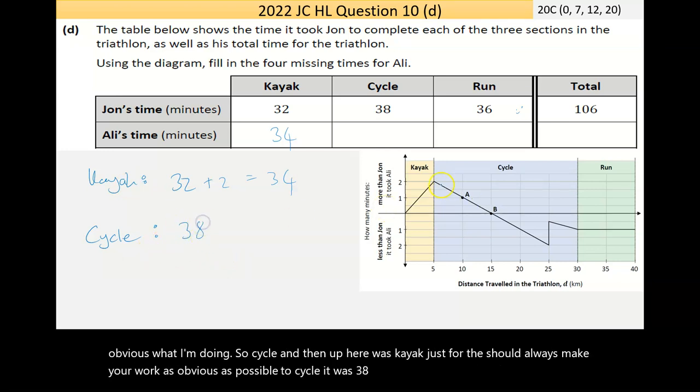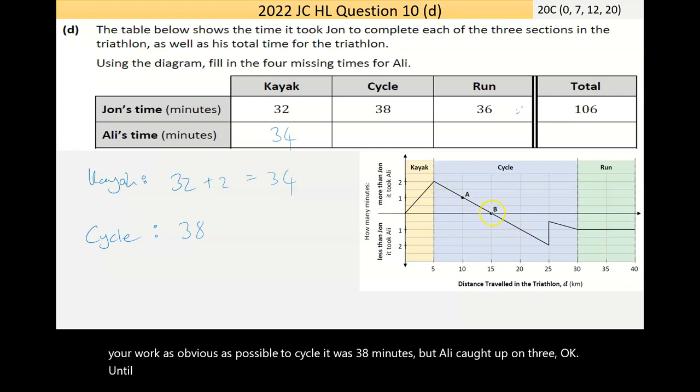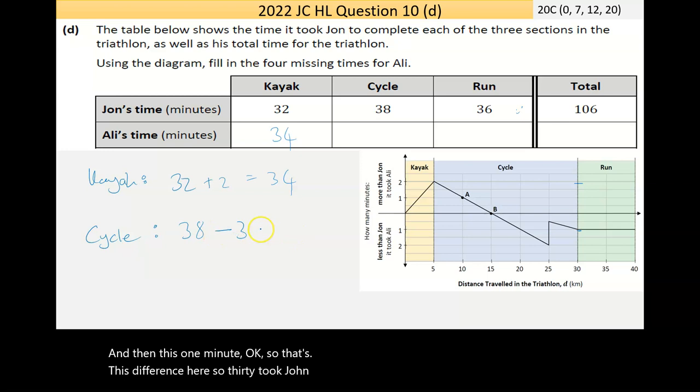Now then the cycle part. Ali catches up. So I'll put the cycle here just to make it obvious what I'm doing. So cycle and then up here is kayak, just for the, you should always try to make your work as obvious as possible. The cycle, it was 38 minutes, but Ali caught up on three, and did it in the same time. So 38 took John, took Ali, 38 take away that three minutes is equal to 35.